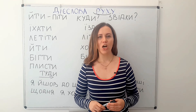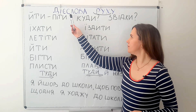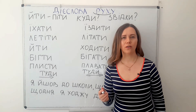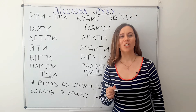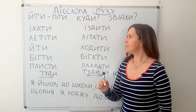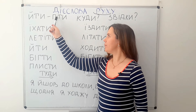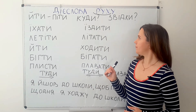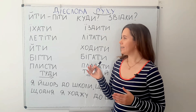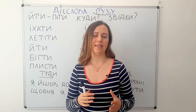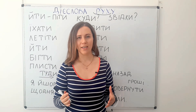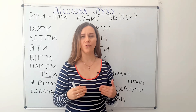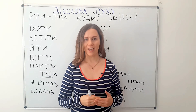Дієслова руху — verbs of movement. Рух means movement. So you already know ЙТИ, ПИ ТИ — to go on foot or to walk. If we see that someone is walking, we can ask some questions, and for that we need question words.